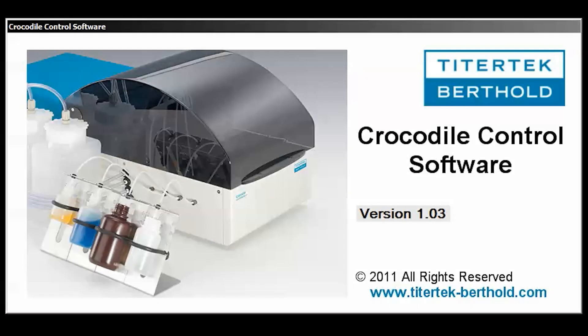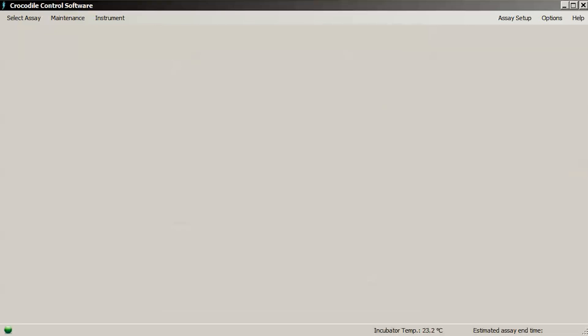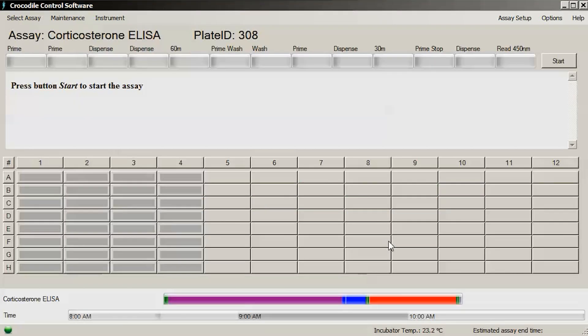With the Crocodile Control software, assay programming is quick and easy. Here we select our pre-made ELISA program for this assay. We enter the plate ID and select which wells to process. On this screen, each of our program steps are displayed, as well as the estimated processing time.